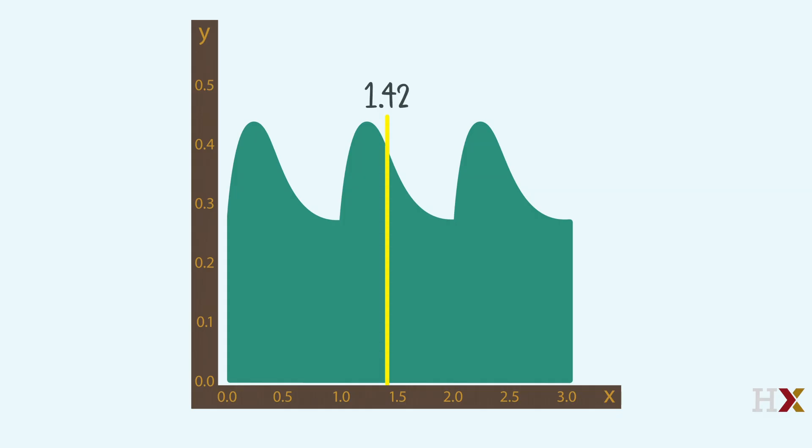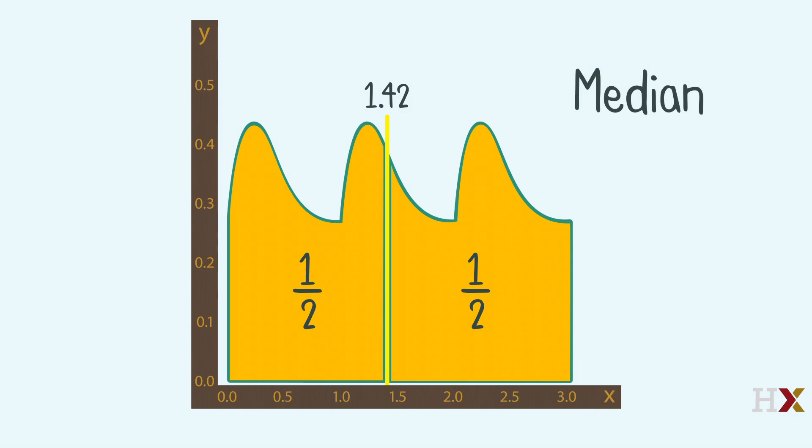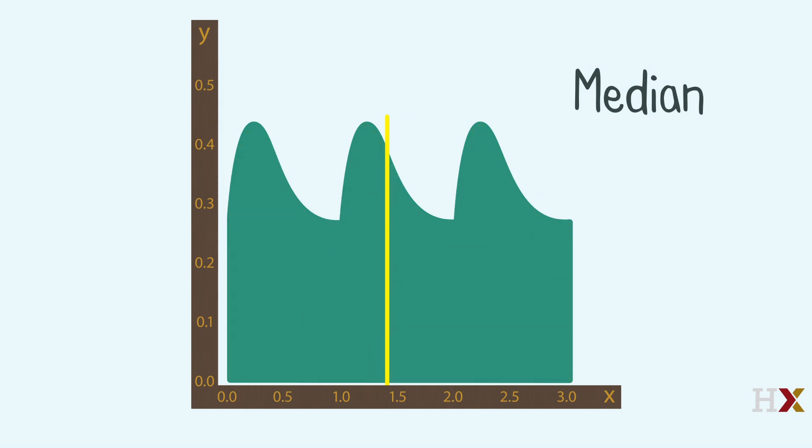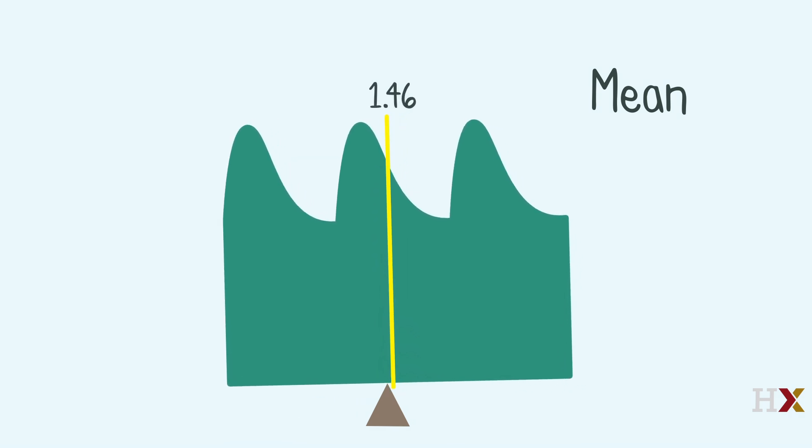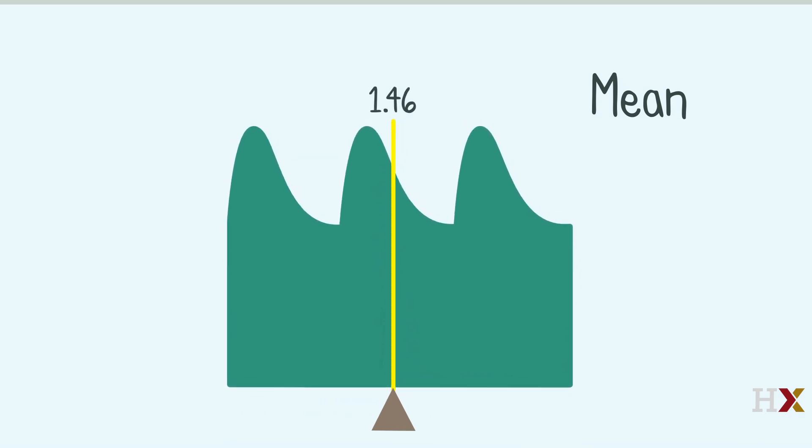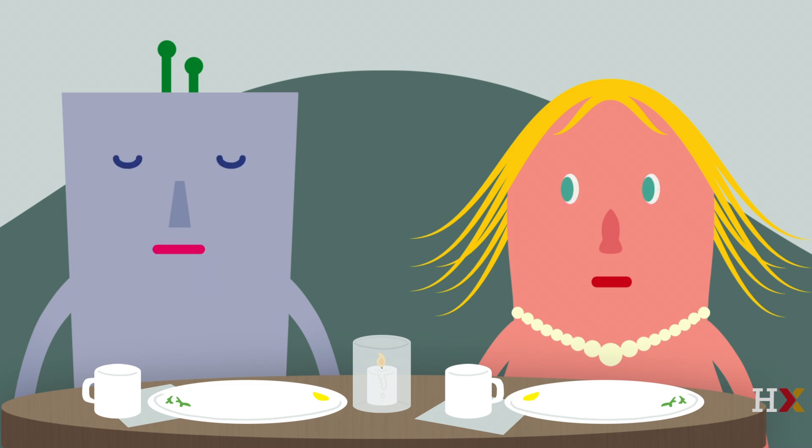Okay, so half the time, Randi is to the left of 1.42, and half the time, she is to the right of 1.42. So how about guessing 1.42? That's the median. But here is the mean, the center of mass. So how about guessing 1.46? How can we decide which form of average to use for our prediction, the mean or the median?